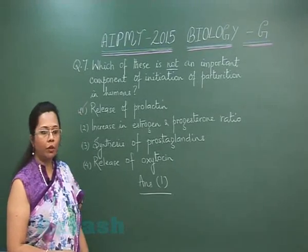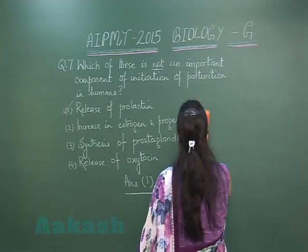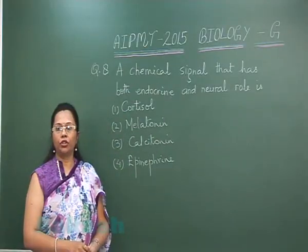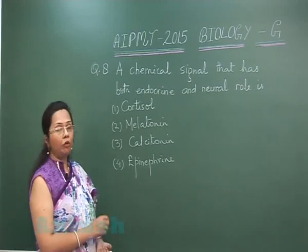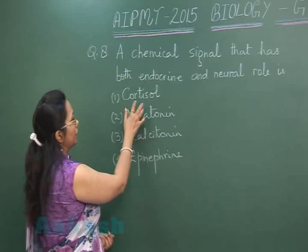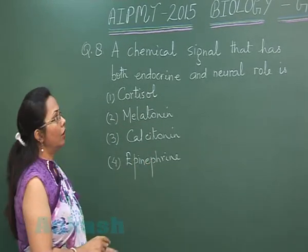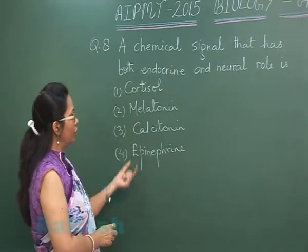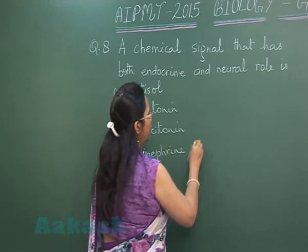Let us move on to question number 8. A chemical signal having both an endocrine and neural role. Cortisol, melatonin, and calcitonin are hormones and they do not have any neural role.